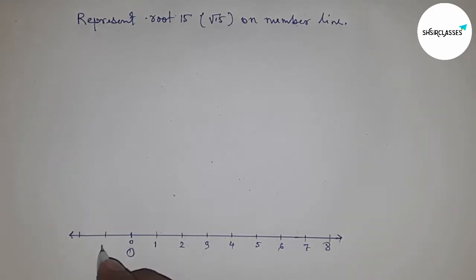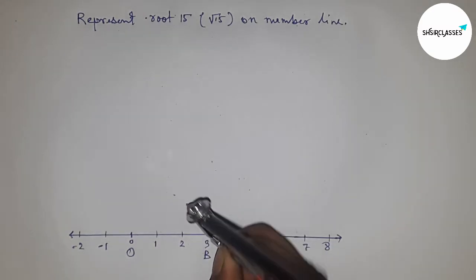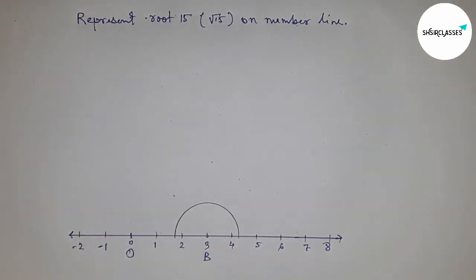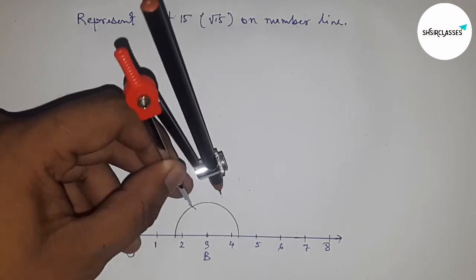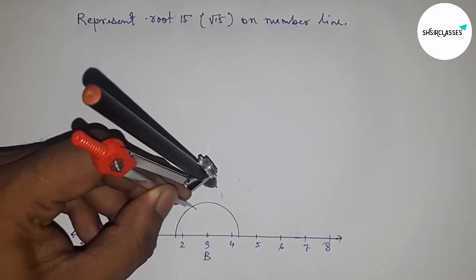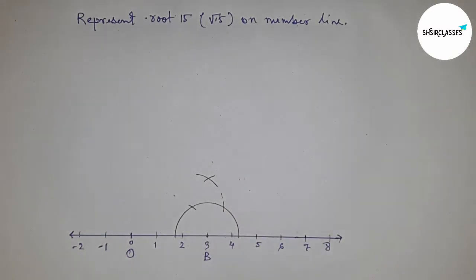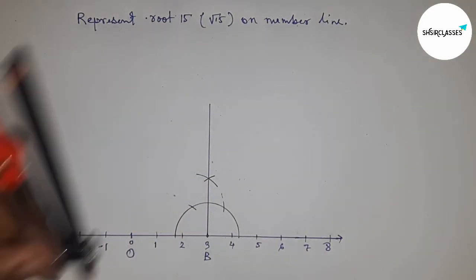Marking this side: one, two, three, four, five, six, seven, eight, and this side minus one, minus two, and so on. First, we need to construct root 13. If you don't know how to construct root 13 on a number line, first watch my video in my channel. Drawing a perpendicular line on the point three.